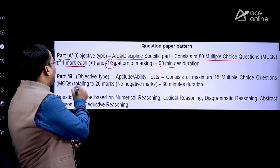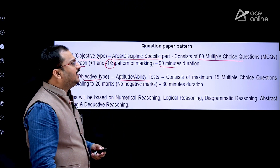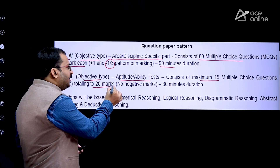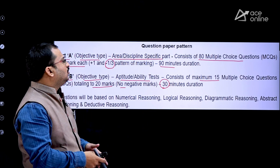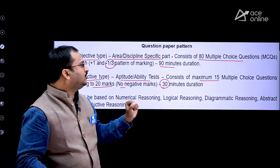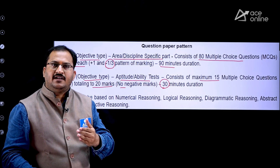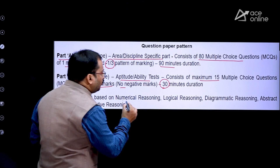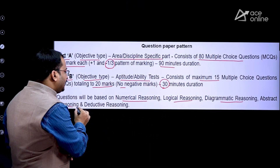Part B is again objective type, consisting of aptitude and ability tests. It contains a maximum of 15 multiple choice questions worth 20 marks, with no negative marking, and the duration is 30 minutes. In total, there are 95 questions — 80 plus 15 — all multiple choice, with a total duration of 120 minutes and 100 marks. The Part B questions are based on numerical reasoning, logical reasoning, diagrammatic reasoning, abstract reasoning, and deductive reasoning.